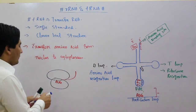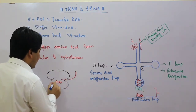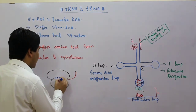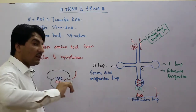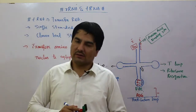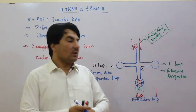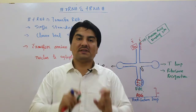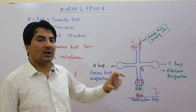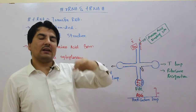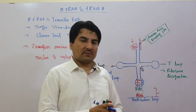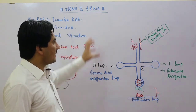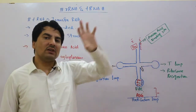Jab ye find out kar leta hai, pata chalta hai yahan par adenine ke saath uracil — chunke RNA hai to uracil lagega — yahan par uracil hai to adenine lagega, aur guanine hai to cytosine lagega. Ab ye kya hai — this is the anticodon. Ab ye anticodon loop read karega, aur transfer RNA nucleus mein chala jata hai.